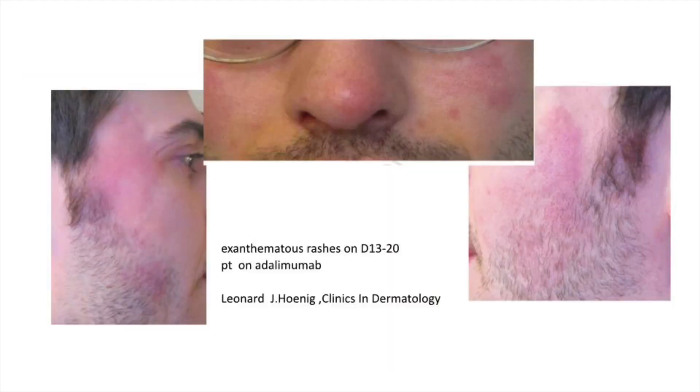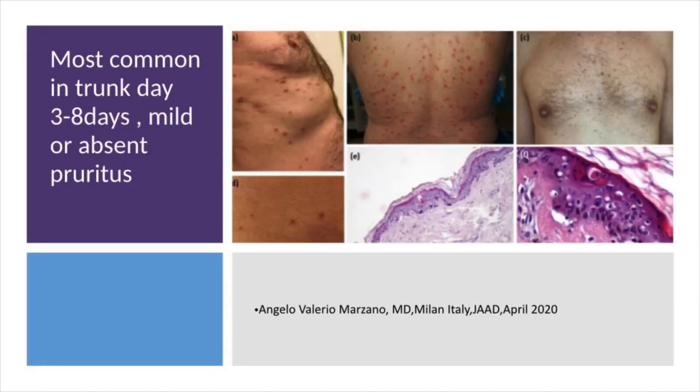Secondly, you can see urticarial rashes which are also generalized and spread throughout the body. Third, we also see an atypical varicelliform rash like chickenpox, which is more common on the trunk. The difference between chickenpox and this is it is more on the trunk and it is not pruritic as in chickenpox.